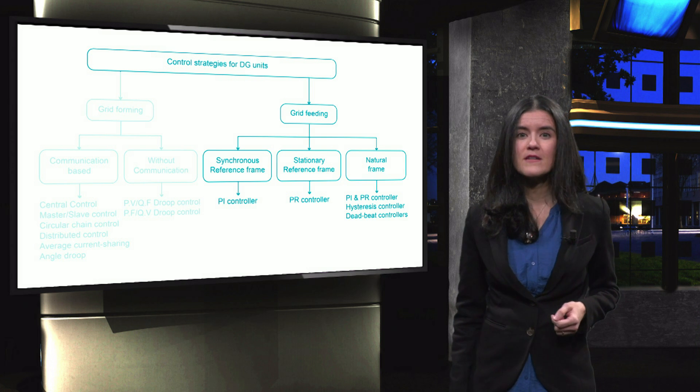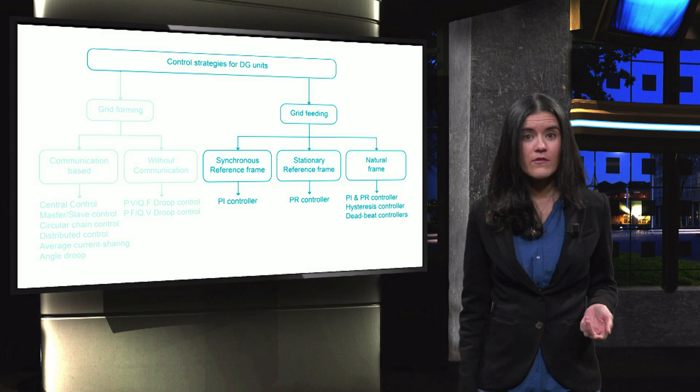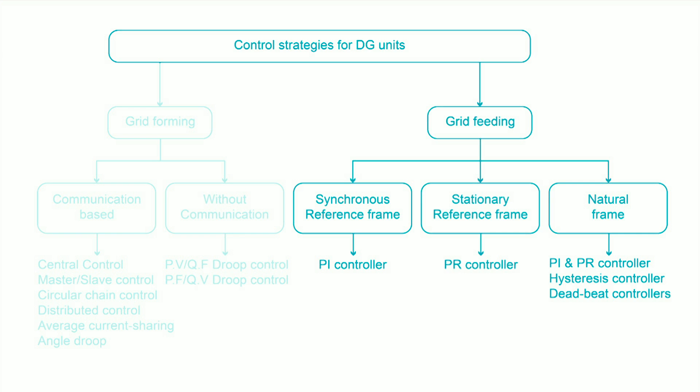Grid feeding types are typically implemented using a synchronous reference frame, a stationary reference frame and a natural frame. We have seen already that through a Clark-Park transform, it is possible to adapt a three-phase ABC signal into a stationary frame alpha-beta and then into a rotating DQ frame. The DQ rotating or synchronous reference frame is used when proportional integral controllers, also known as PI, are implemented. Stationary reference frame alpha-beta is used to implement proportional resonant or PR controllers. Finally, natural reference frame ABC can be used for a wide range of controllers, like hysteresis and deadbeat controller.